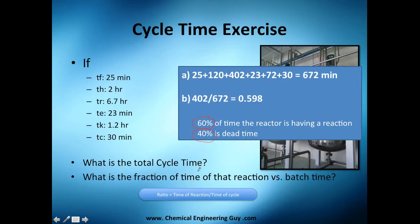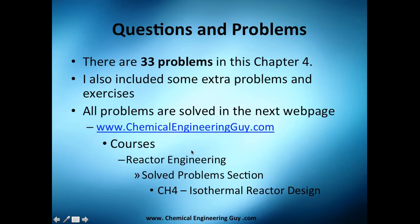That fraction of 0.598 means essentially 60% of the time the reactor is actually running a reaction, and 40% of the time is spent on other activities. If you had to guess whether the reactor is working or not, you'd lean toward yes — the probability that it's actually reacting is slightly higher than not. And that's everything for the batch reactor topic.